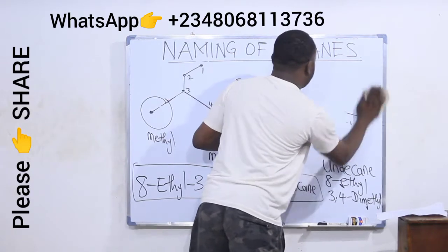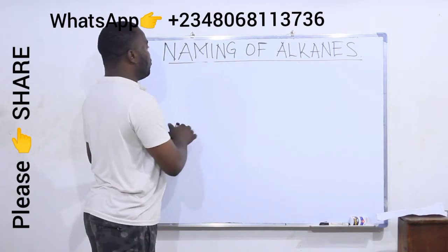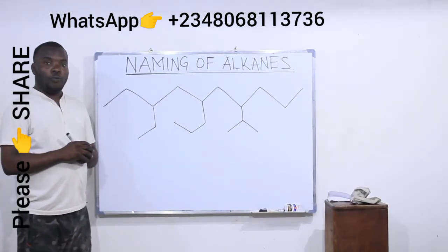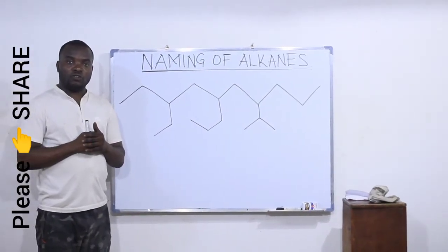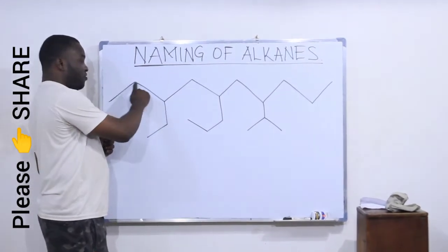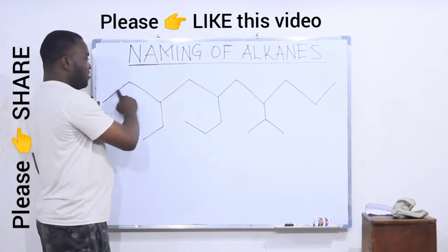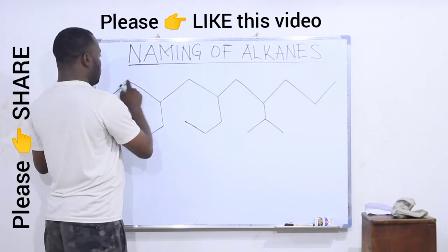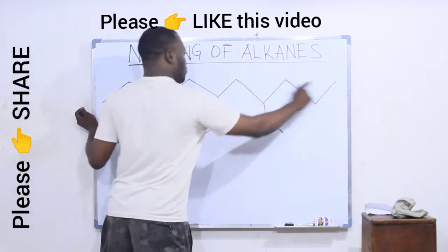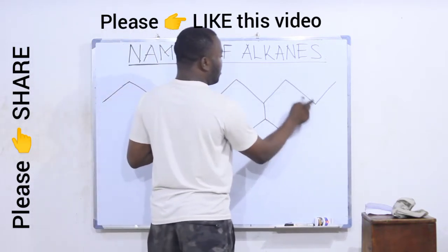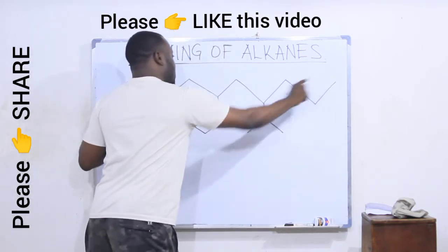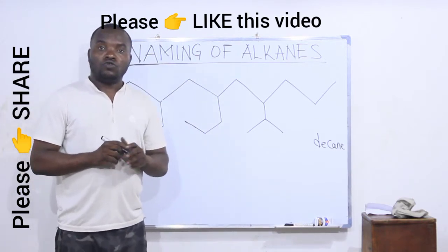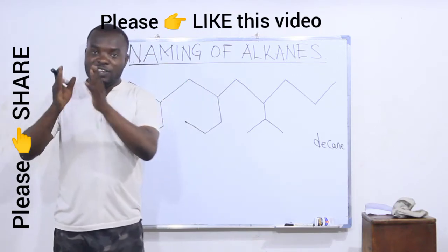Let's quickly look at another example. Rule number one says identify the longest continuous carbon chain. If I take one direction I get 9 carbons. Another direction also gives 9. If I take the horizontal direction I get 10. So my longest chain is the horizontal line with 10 carbons, and 10 is called decane. No matter what, the name of this structure must end with decane. The name of an organic compound ends with the name of the longest chain.